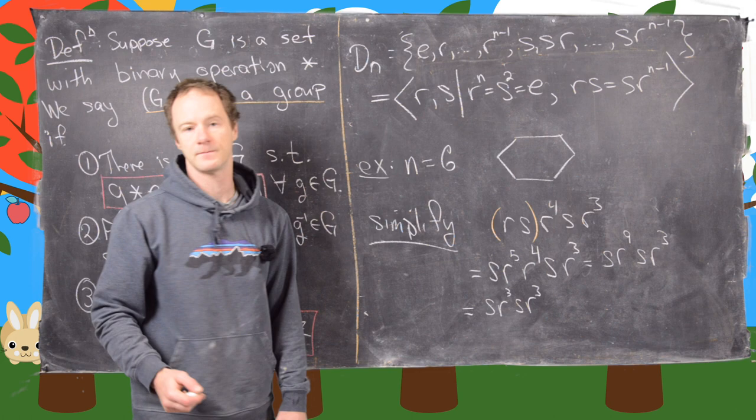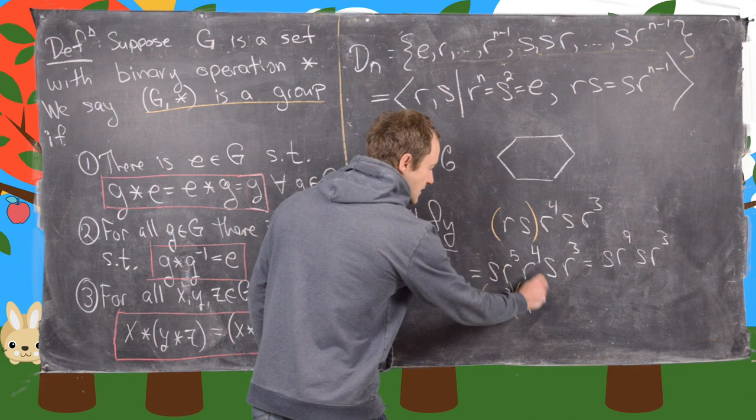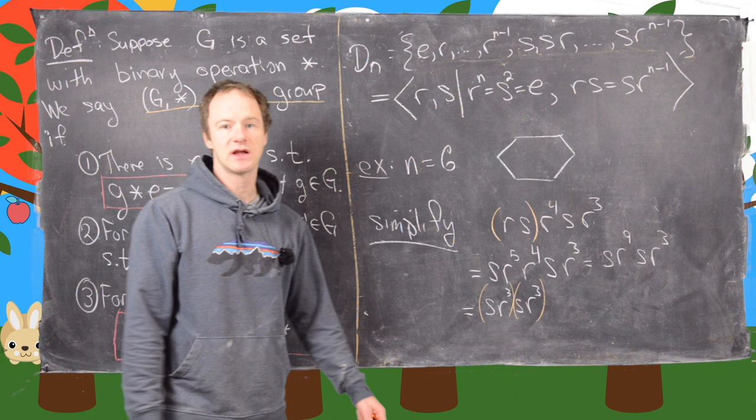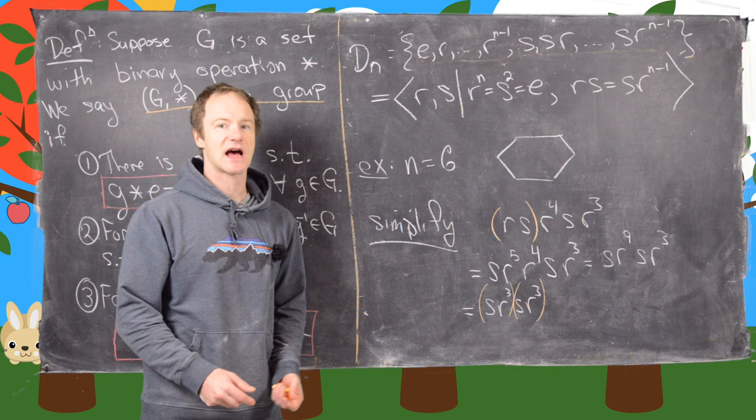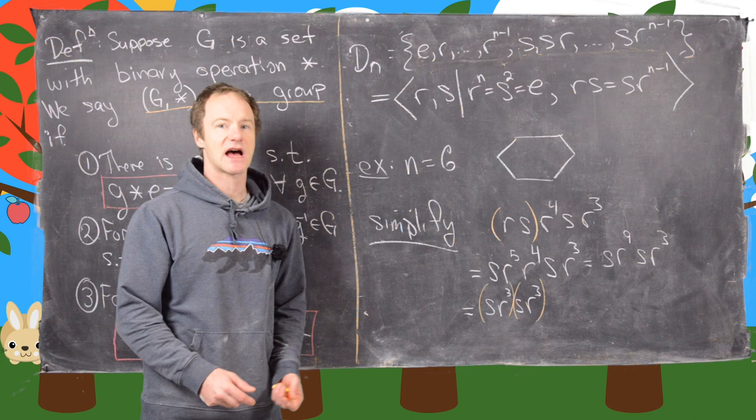Now, a rotation composed with a reflection is always a reflection, so s·r cubed is a reflection, and s·r cubed is also a reflection — in fact the same reflection. Any time you compose one reflection with itself, you end up with the identity. So this entire expression simplifies to the identity.